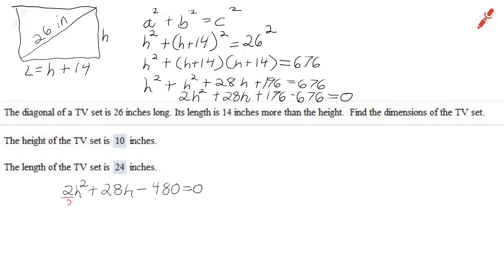Now the smaller the numbers the better. Notice that 2 goes into all these numbers. So I'm going to divide each number including the right hand side by 2. So I'll have h squared plus 14h minus 240 equals 0.